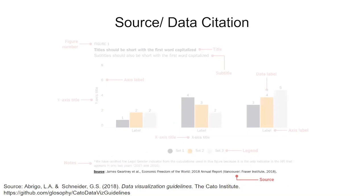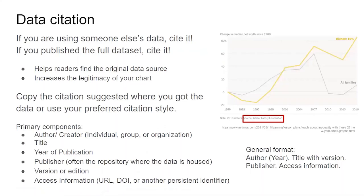The final data visualization component is a source or data citation, which helps viewers find the data used in the visualization so they may delve deeper into the data if they wish, and it also adds credibility to the visualization itself. If you're using someone else's data, cite it; and if you publish the full data set, cite it. You can either copy the citation suggested where you got the data or use your preferred citation style. If there is no suggested citation and you don't have a preferred citation style, you can use the general format of author, year, title with version, publisher, and access information, which are the primary components of a data citation.